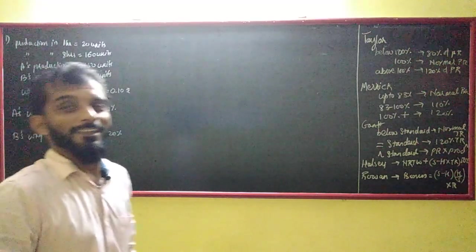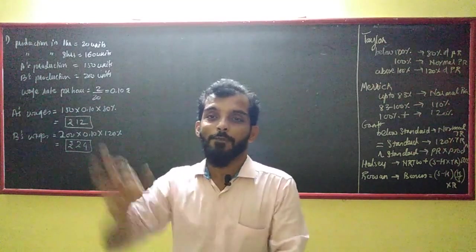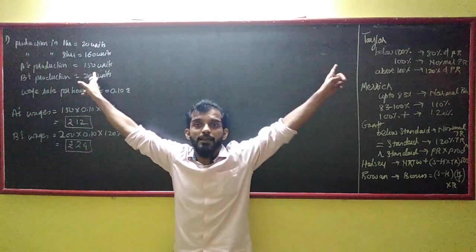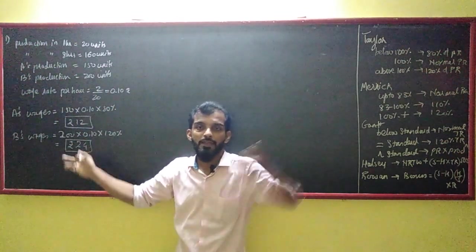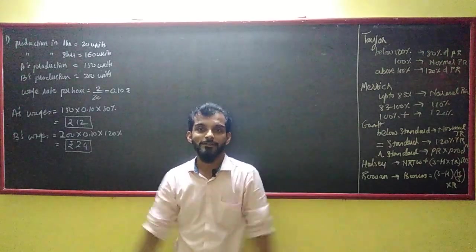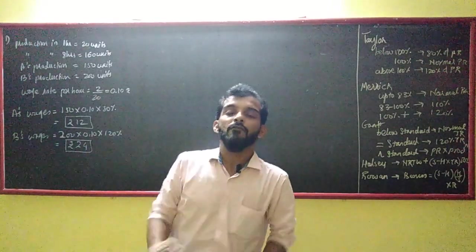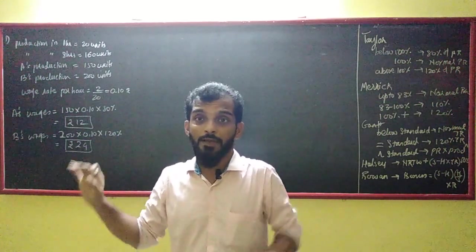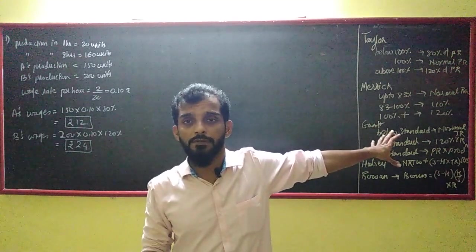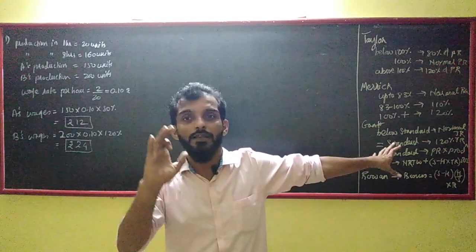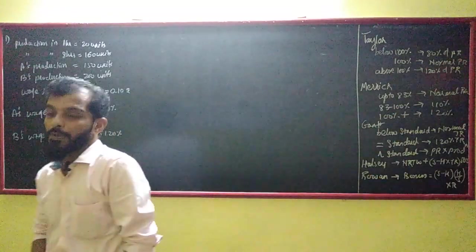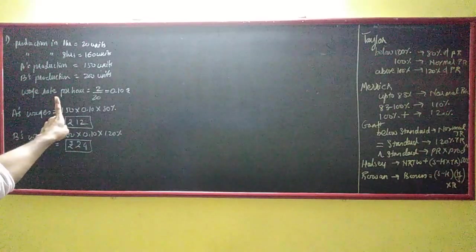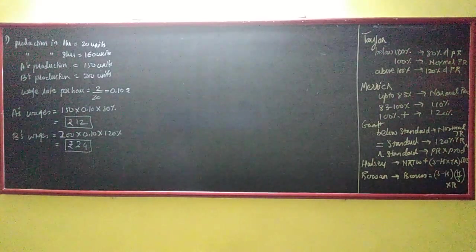The most important thing is that once you identify the standard production, you compare actual output to determine whether efficiency is 80% or 120%. The first sum is clear. The board will be changed for the next sum — don't be confused. I hope the formulas are clear. See you next time.